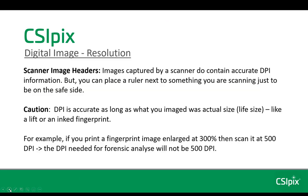Images captured by a scanner do contain accurate DPI information. This is because items are placed on a glass surface at a fixed distance from the scanner sensor array, and the system uses resampling to give you the actual DPI you requested when you grabbed your image. Basically, the system allows you to set the DPI. But you can place a ruler next to something you're scanning just to be on the safe side.